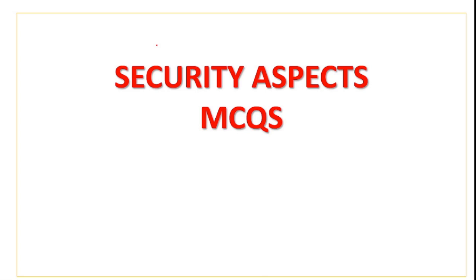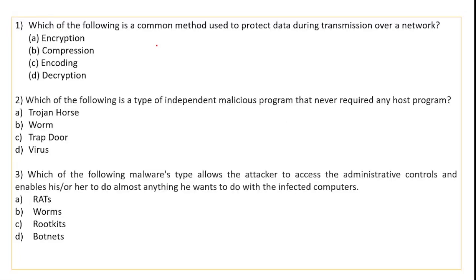Hello everyone. In this video we will do security aspect MCQs. The first question: which of the following is a common method used to protect data during transmission over a network? The correct option is encryption. Encryption is a process that converts original data into coded form while data travels from one device to another in a network, in order to protect the data.